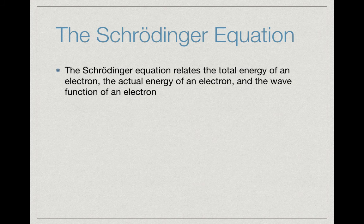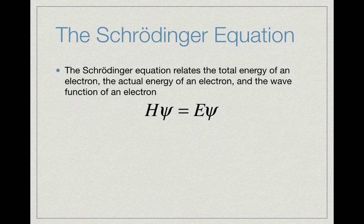The equation that allows us to solve the equation of an atom and the electrons is called the Schrödinger equation. What it does is relate the total energy of an electron, the actual energy of an electron, and the wave function of an electron. It has a very simple-looking equation: H psi is equal to E psi. But the reality is the equation is actually quite complex—it looks simple but is very complex.